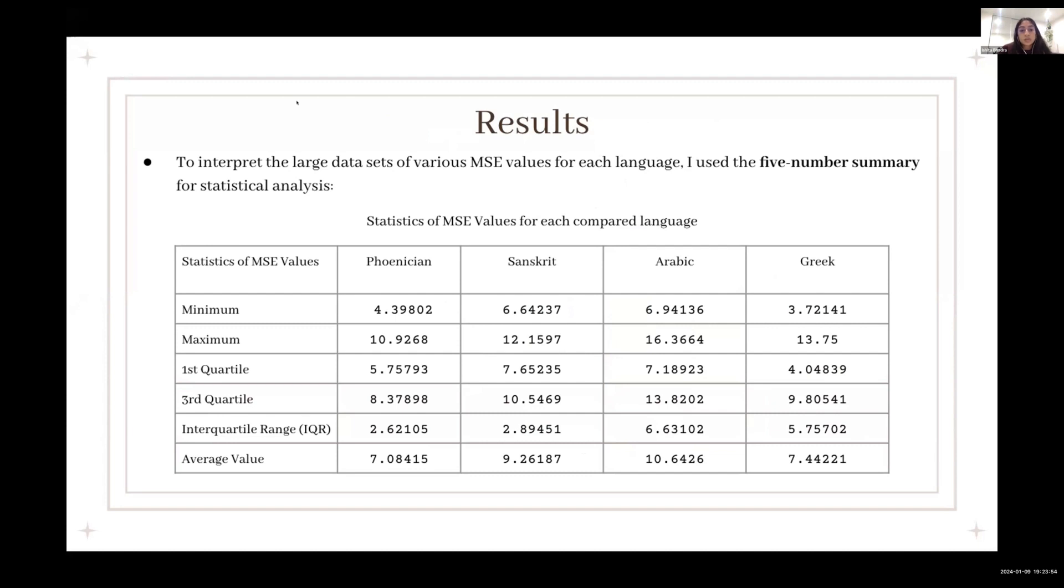So for the results, to interpret the large data sets I had for each of the four languages, I used the five-number summary for statistical analysis. For the minimum mean square error value, it was with Greek, which was 3.7. And for maximum, unsurprisingly, it was Arabic. And then the interquartile range, which I used for determining how consistent the data was, it was in Phoenician. And the average value, which I thought to be the most important statistic, Phoenician had the lowest average value.